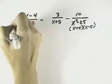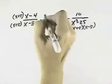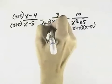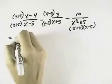This fraction is missing the factor of x plus 5, so we multiply the numerator and the denominator by x plus 5. This fraction is missing the factor of x minus 5, so we multiply numerator and denominator by x minus 5.